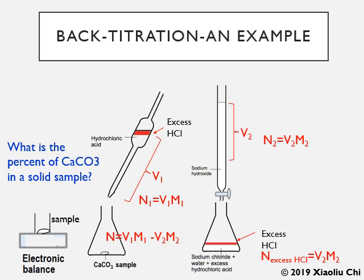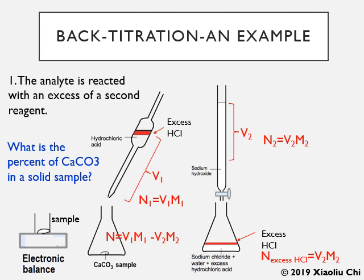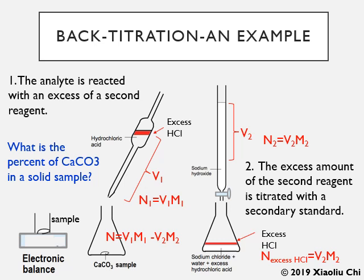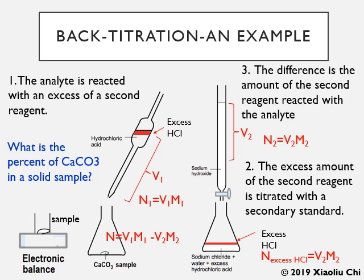In general, there are three steps for back titration. First, the analyte — in this case the solid sample — reacts with an excess amount of a second reagent, here hydrochloric acid. We then titrate the excess second reagent, hydrochloric acid, with a secondary standard, sodium hydroxide. The difference between these two is the amount of second reagent that reacted with the analyte — in this case, hydrochloric acid reacting with the solid sample.